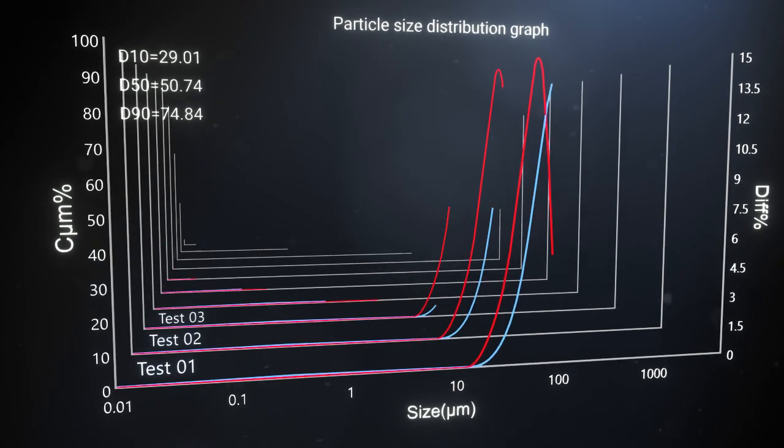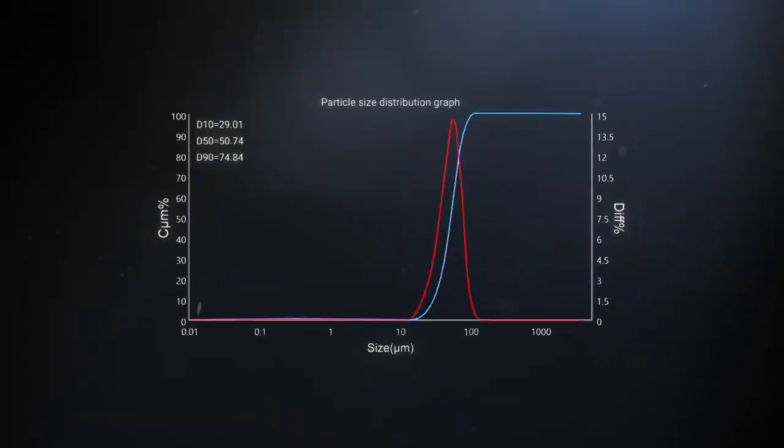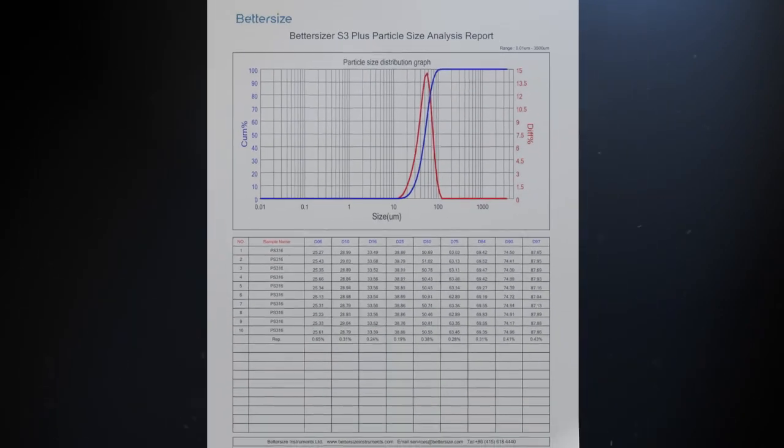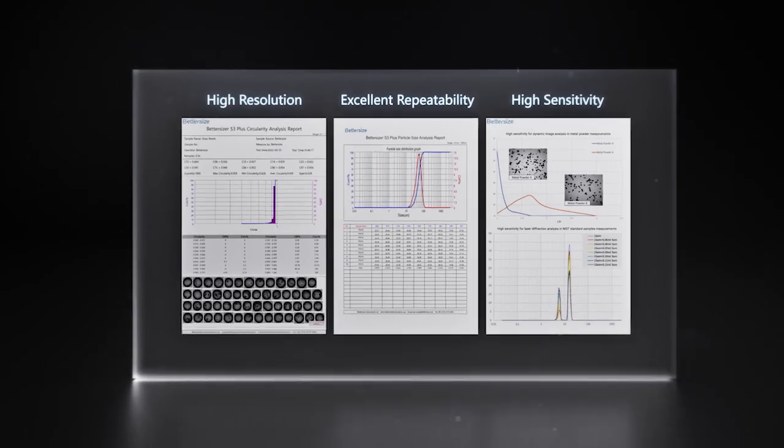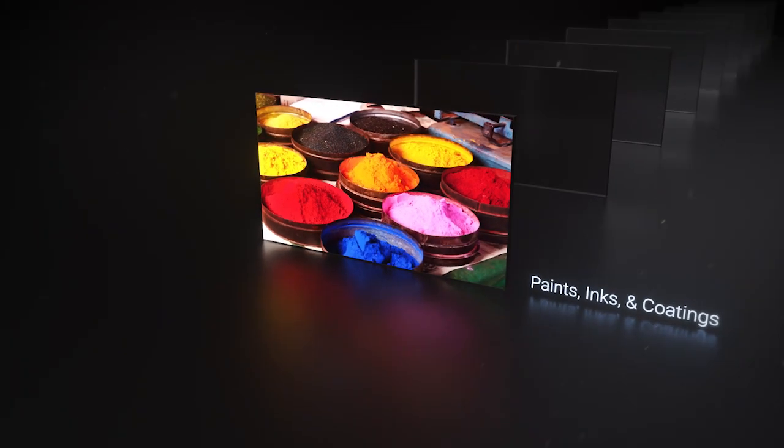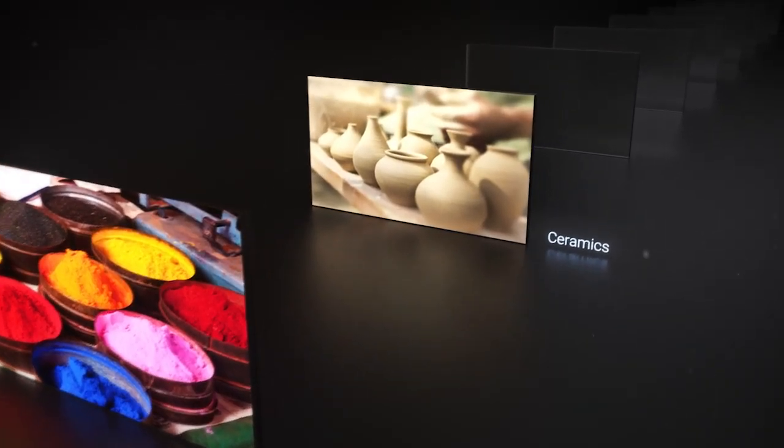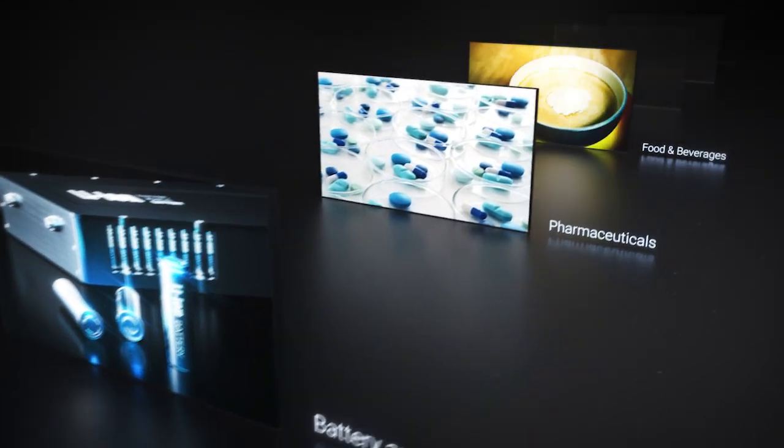Thanks to all these amazing features, the Betasizer S3 Plus provides the most accurate results with excellent repeatability, high resolution and high sensitivity. The Betasizer S3 Plus has been widely used for various applications. It breaks all the rules of what a particle size and shape analyzer can do.